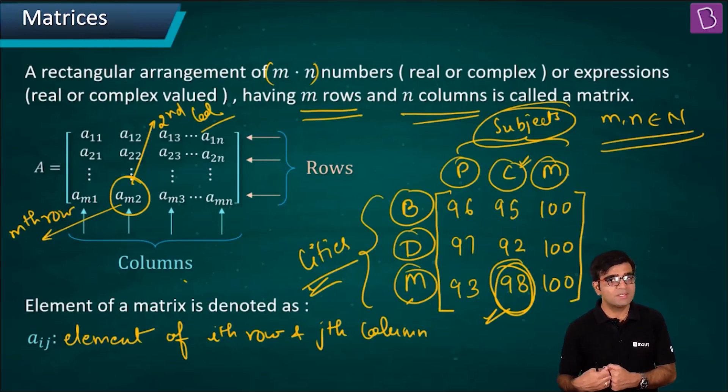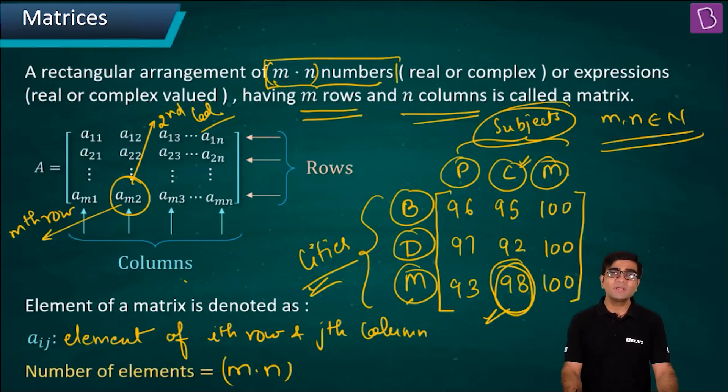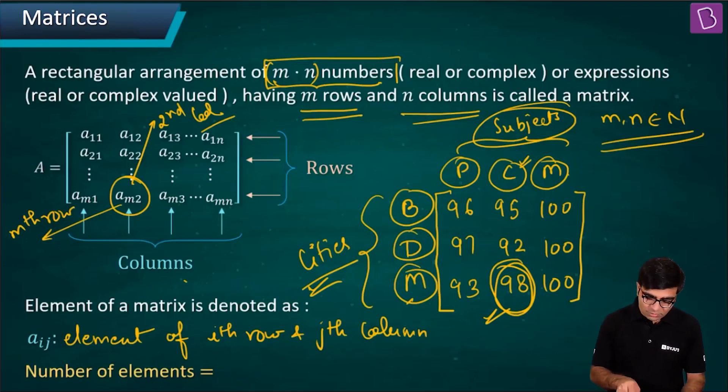If I talk about the total number of elements, we have total m into n numbers. The total numbers will be simply m into n. These will be the number of elements. The total number of elements equals the number of rows multiplied by number of columns, which is m into n.